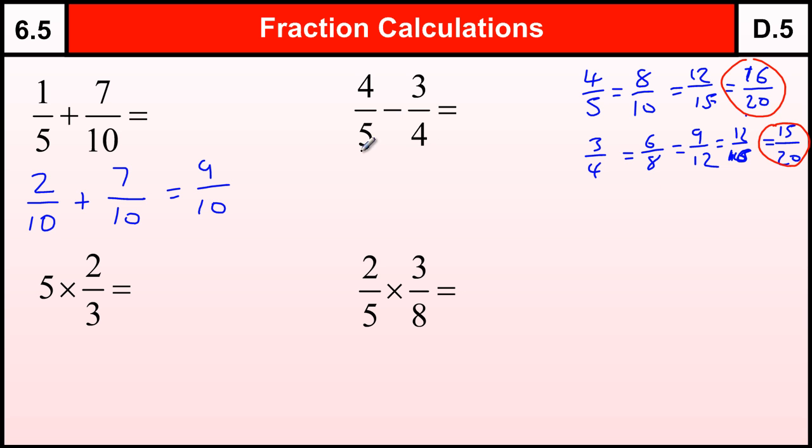So what I'm actually doing here is changing the four-fifths to sixteen out of twenty and the three-quarters to fifteen out of twenty. And sixteen-twentieths take away fifteen-twentieths leaves me with just the one-twentieth.